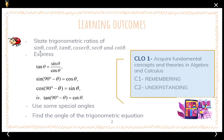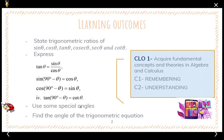Your first learning outcome today is to state the trigonometric ratios of sine, cosine, tangent, cosecant, secant, and cotangent. Express tangent as sine over cosine, sine(90 minus theta) as cosine, cosine(90 minus theta) as sine, and tangent(90 minus theta) as cotangent. Use special angles and find the angle of a trigonometric equation.